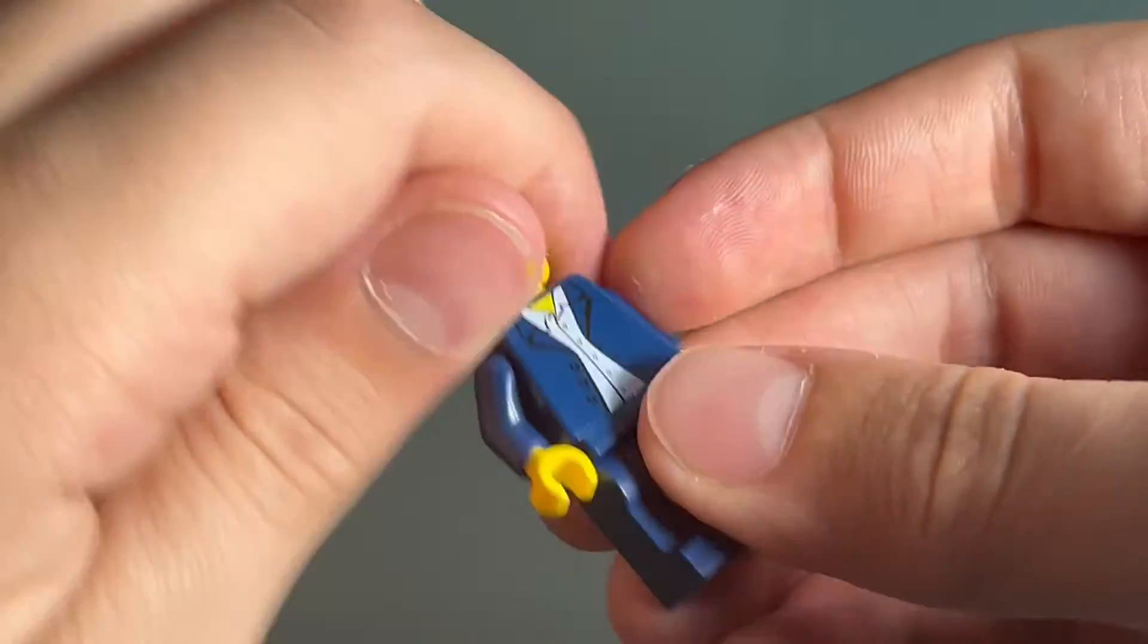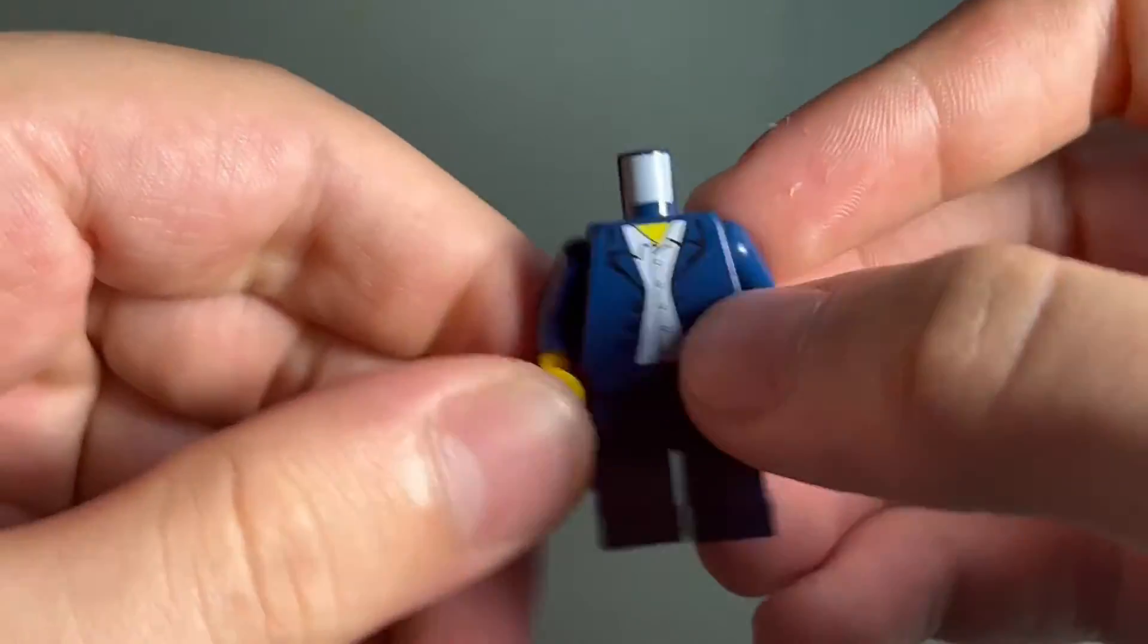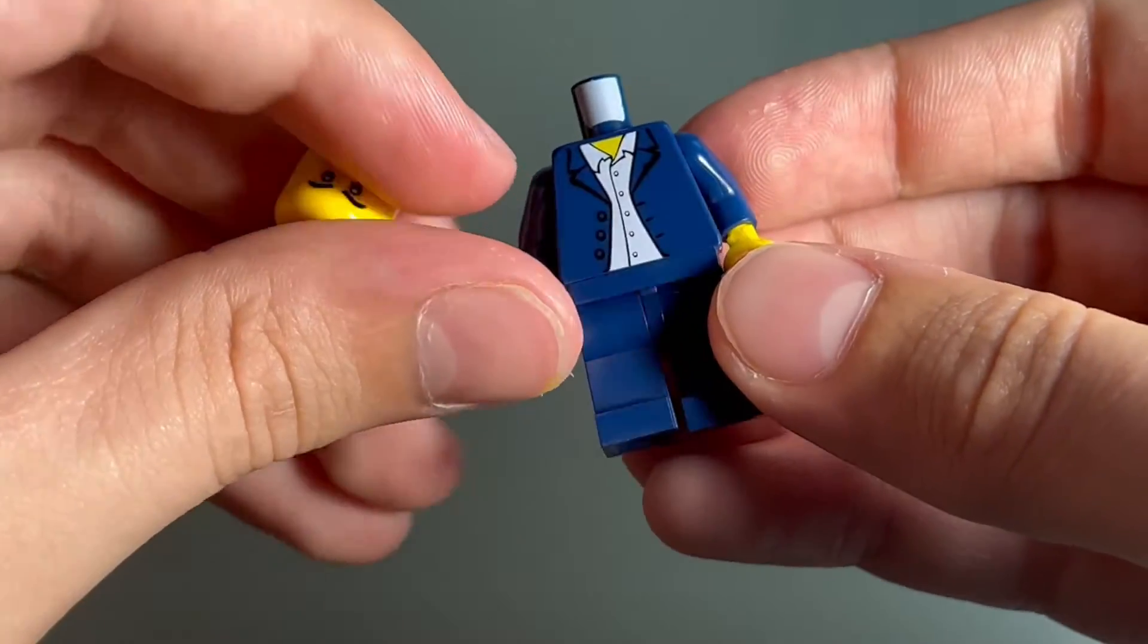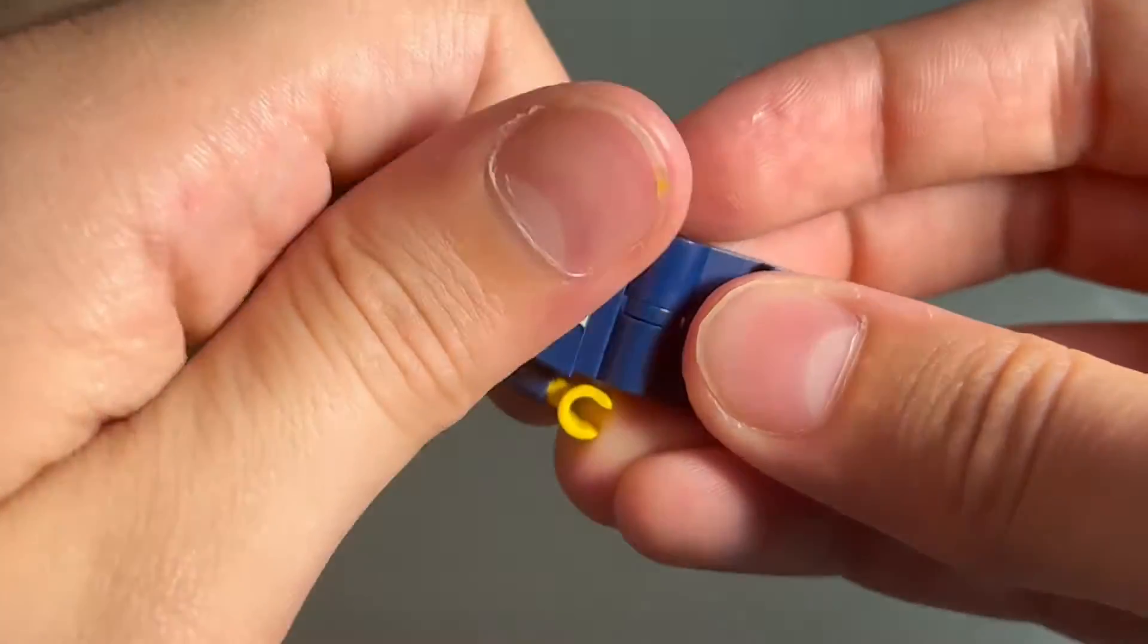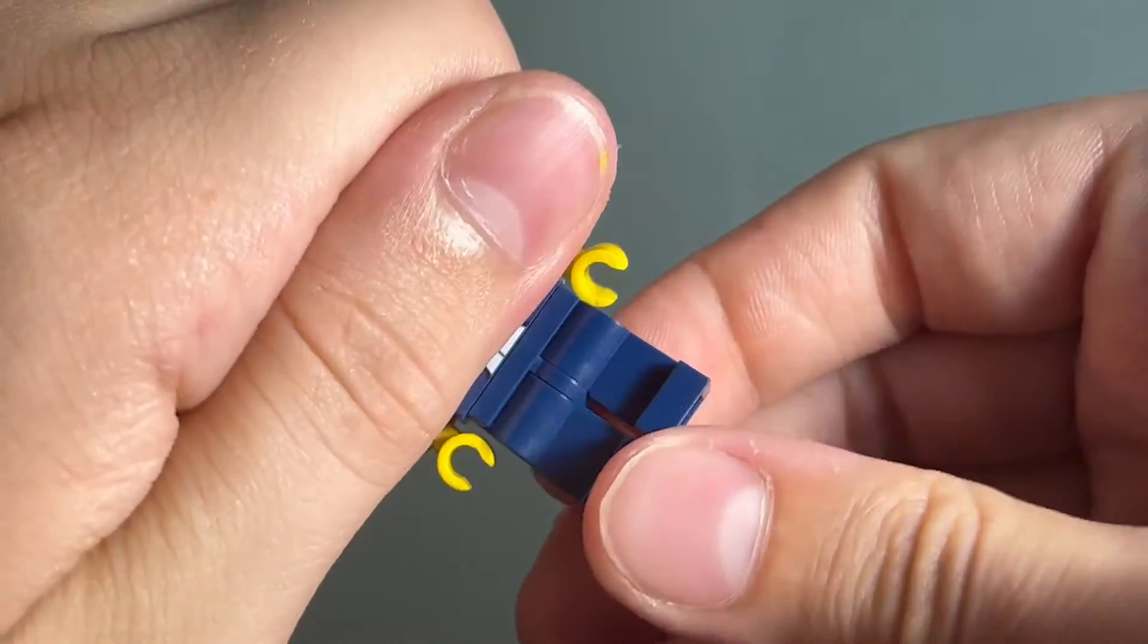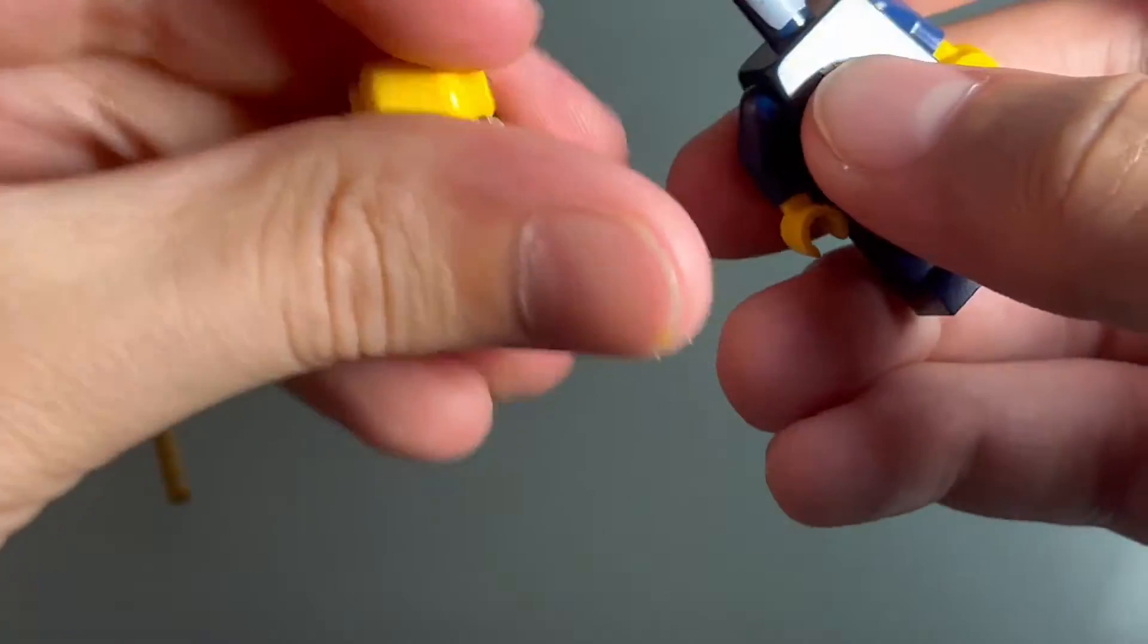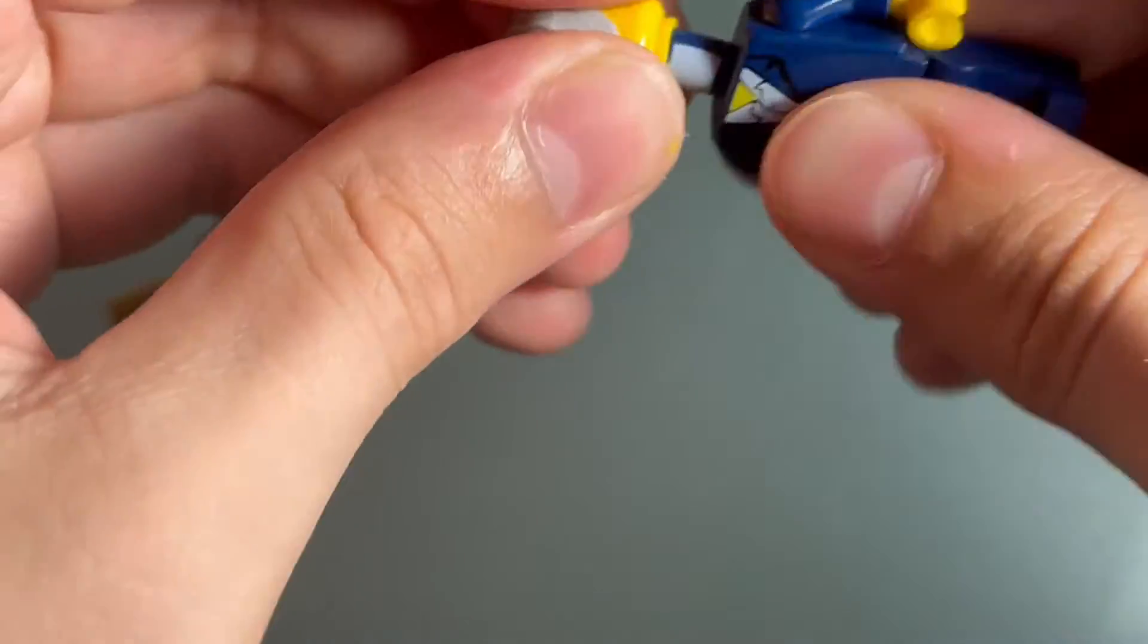Anyway, then I gave him this normal citizen torso here which is like a coat. I thought that looked pretty good to match with the colors, and then just some normal blue coat pants there.